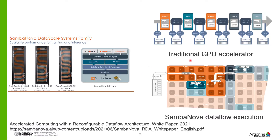The traditional GPU accelerator involves a lot of data movement and context switching. For example, for convolution and pooling operations, data from memory has to go into the cores for convolution, then context switching happens, results are stored in memory, and data and weights are moved back into the cores for pooling. SambaNova addresses these two issues — data movement and context switching — using the SambaNova dataflow execution.